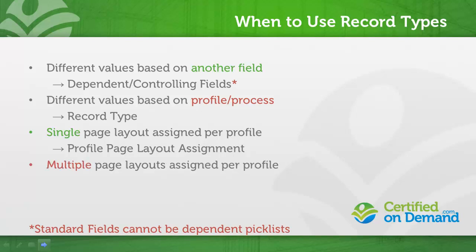However, if the sales team had two very different types of leads — one is a consumer lead and the other is a business lead — and that same team works both of these types of leads and the information captured for each varies significantly, now you're looking at one profile that gets assigned a different page layout depending on the type of sale they're engaging in, and that definitely needs a record type.